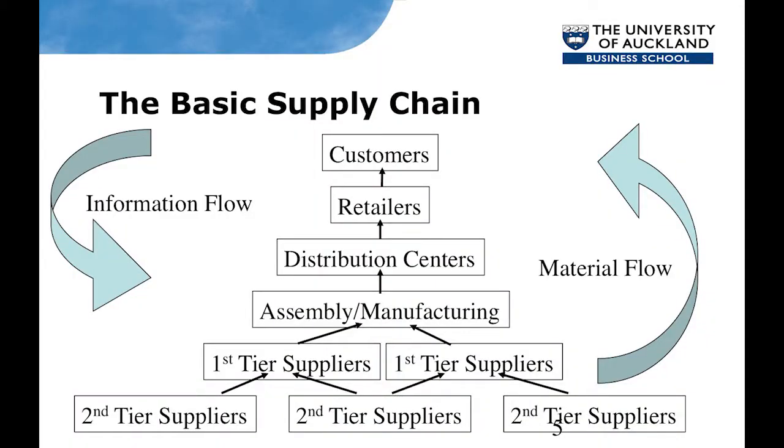That's your basic supply chain. You've got goods flowing — and of course we can also talk about services. We have service supply chains or value chains, and we have information. Research in this area is all about flows of goods or information: how to make them more efficient, how to make them more effective, and how to coordinate different players acting within that whole supply chain.